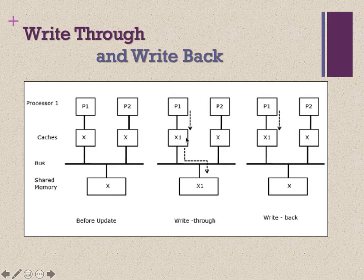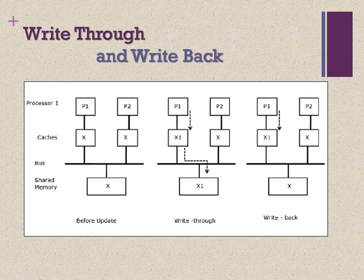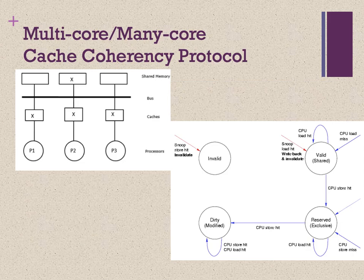This diagram explains write-through and write-back policies. For write-through, when processor 1 updates address X1 in the cache, X1 is also immediately updated in main memory. For write-back, X1 is updated in the cache but not immediately written to RAM. The before-update state is shown on the left side of the figure.